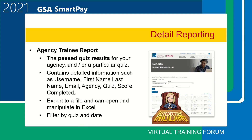The agency training report returns user details such as user name, first name, last name, agency, quiz, score, completion dates, and a list of quiz results for users within your agency. This report is helpful if you have a list of people who you need to confirm have completed their training for a specific quiz and time period. You can filter by quiz and date. This is one of our two most commonly used reports. Most AOPCs export this information into Excel where they can then manipulate it — for example, filtering data by bureau if your email address reflects the bureau name.